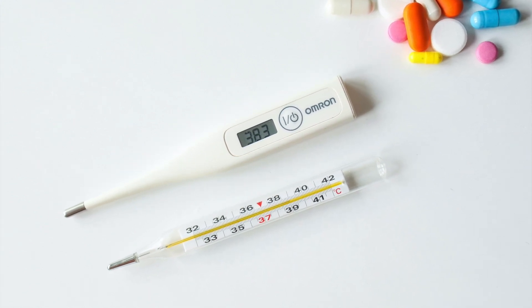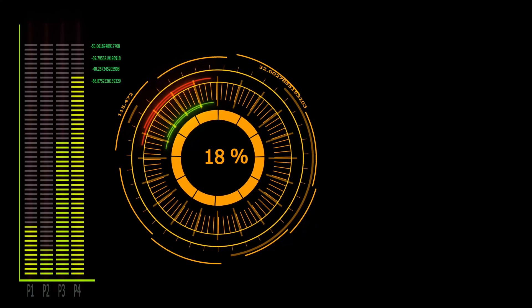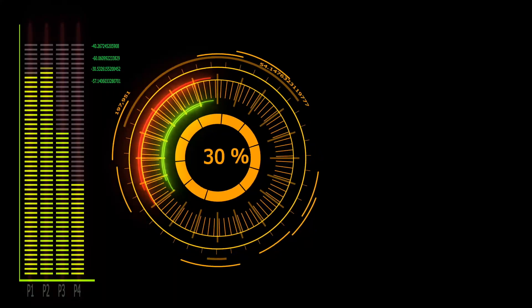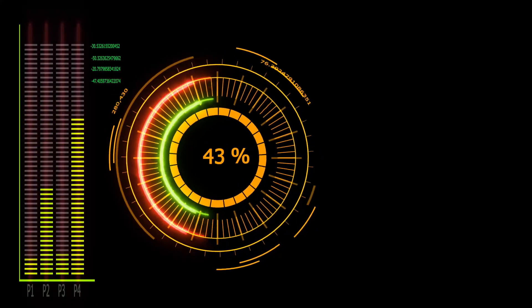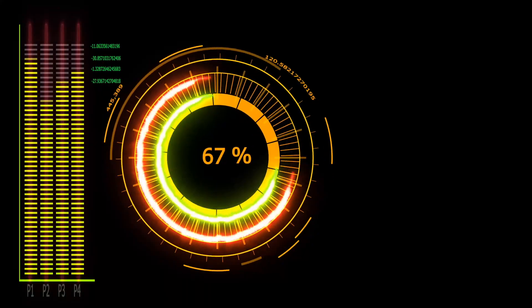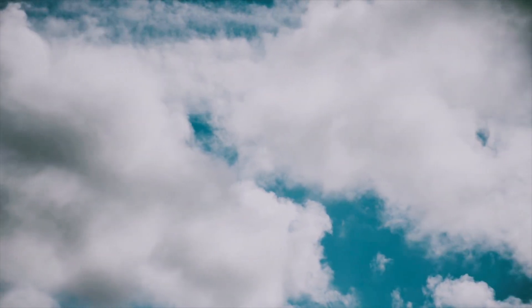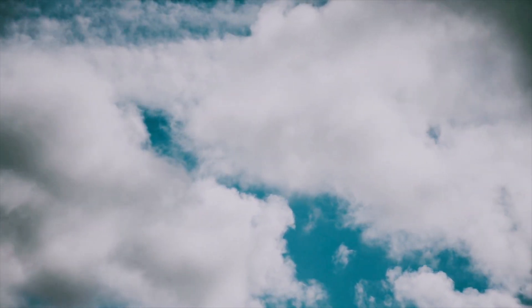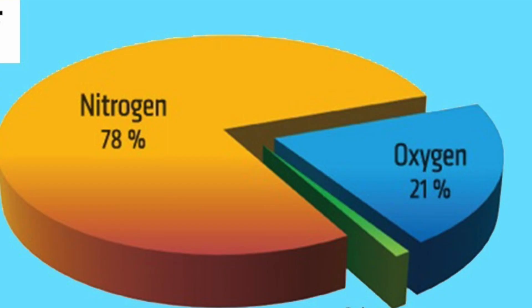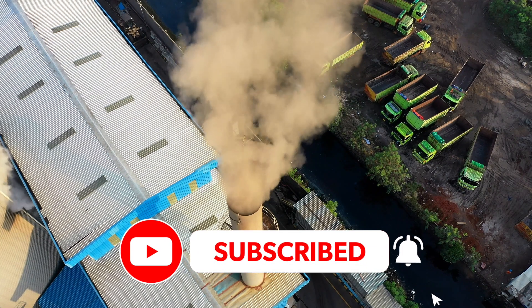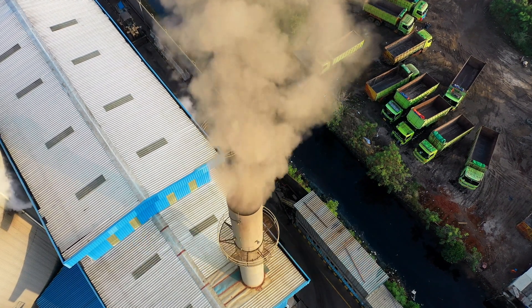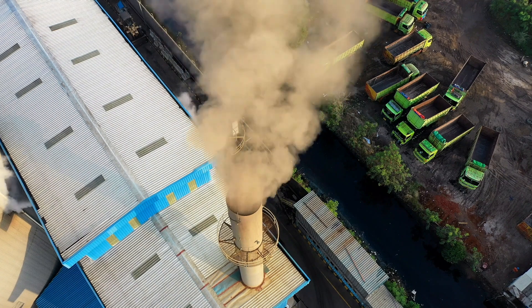However, instead of showing changes in temperature, the AQI is a way of showing changes in the amount of pollution in the air. The air in our atmosphere is mostly made up of two gases that are essential for life on earth: nitrogen and oxygen. The AQI measures certain universally identified pollutants to check air quality.